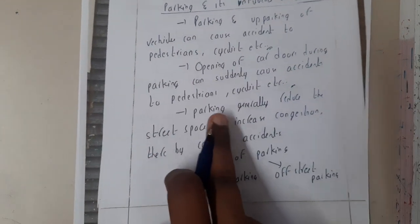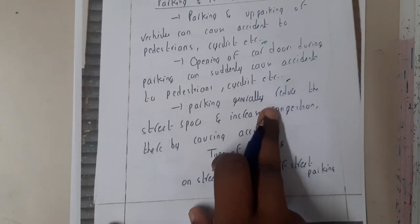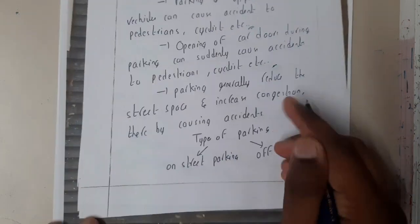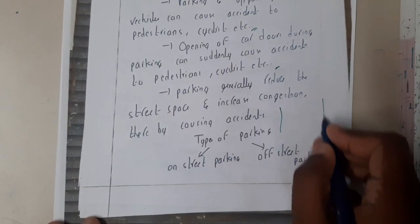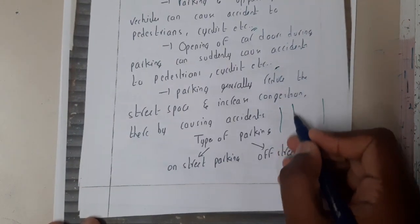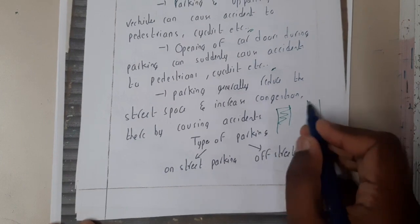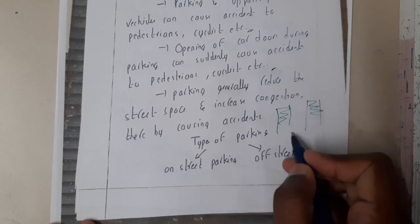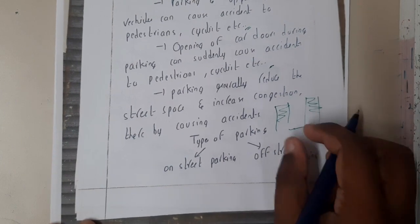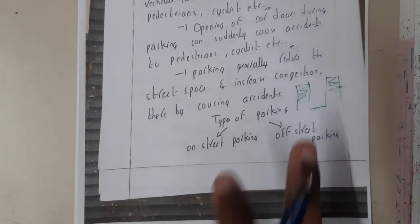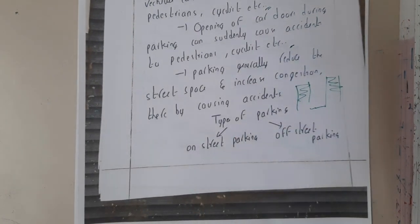Parking generally reduces the street space. If the street extends to a certain width but parking is occupied on both sides, the effective street space is significantly reduced.